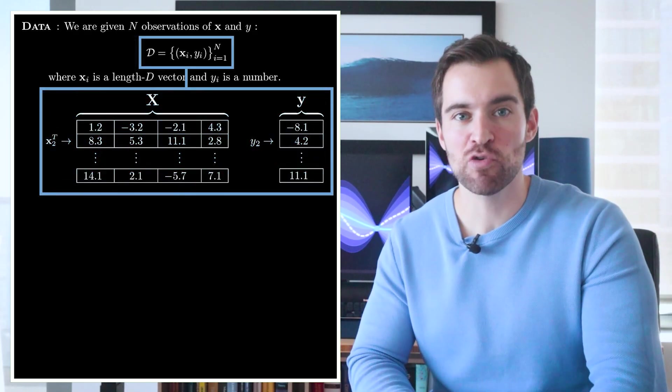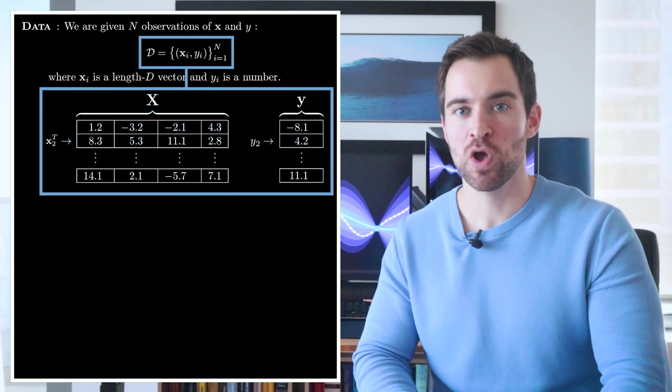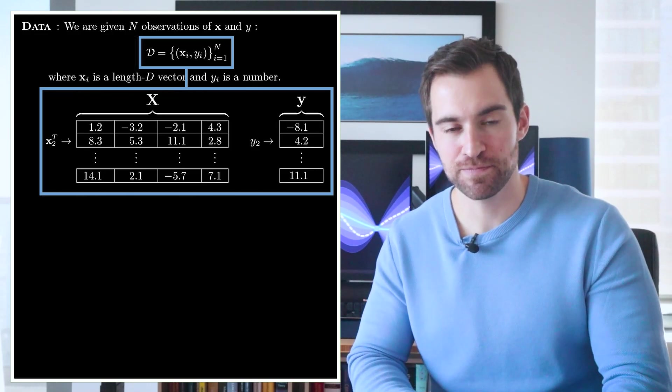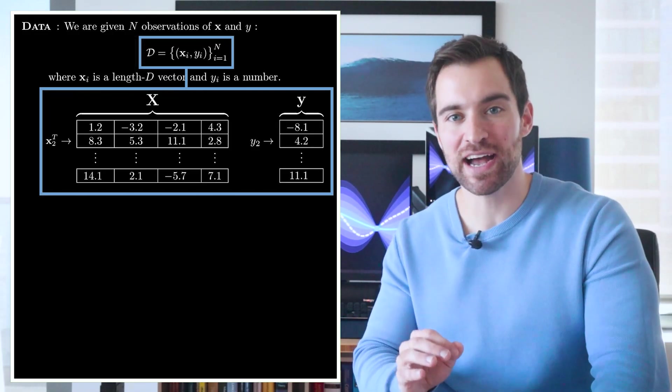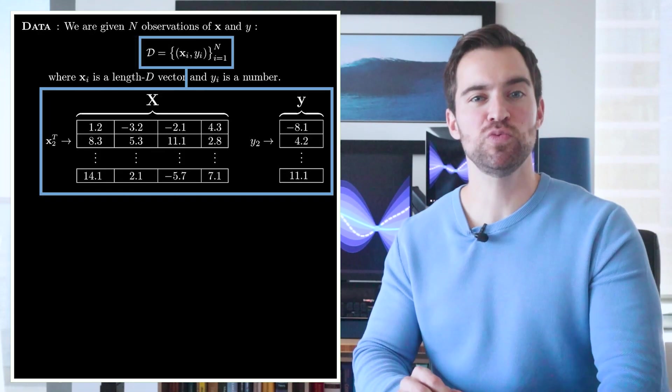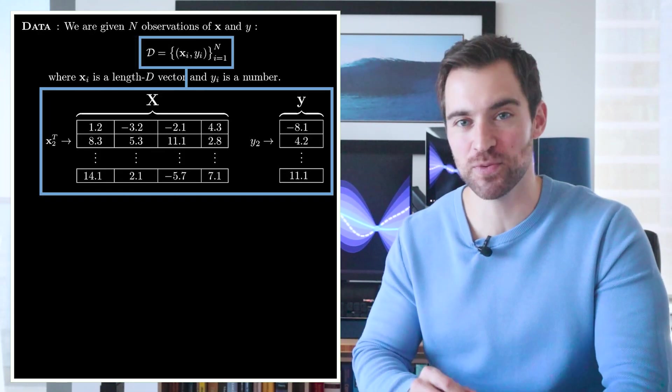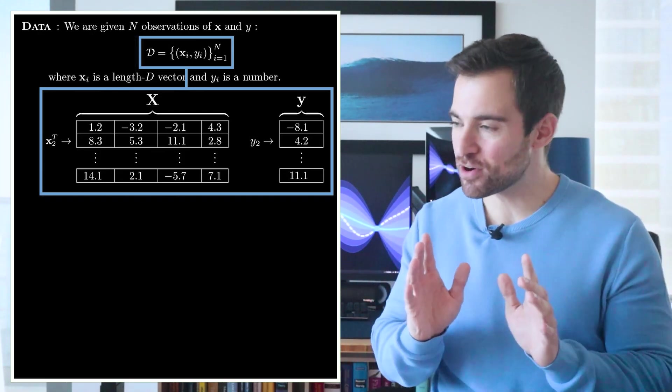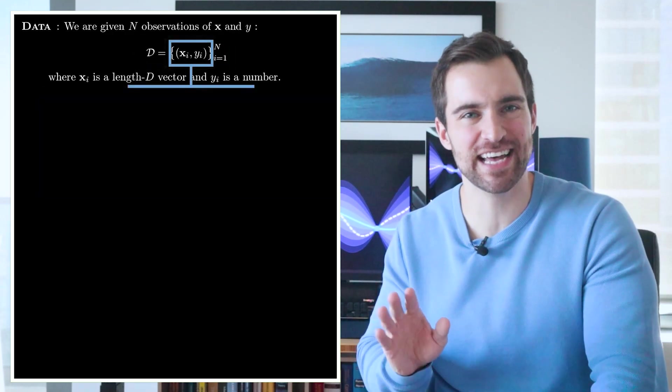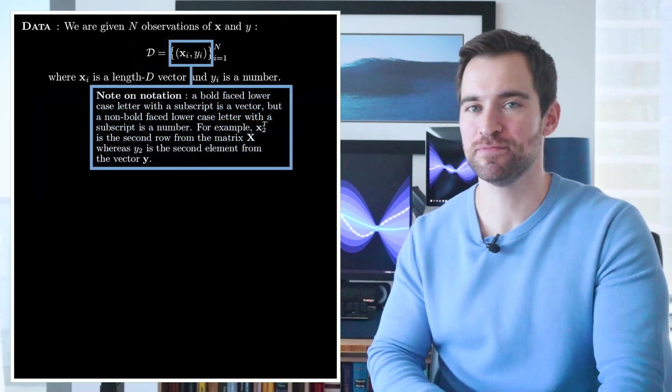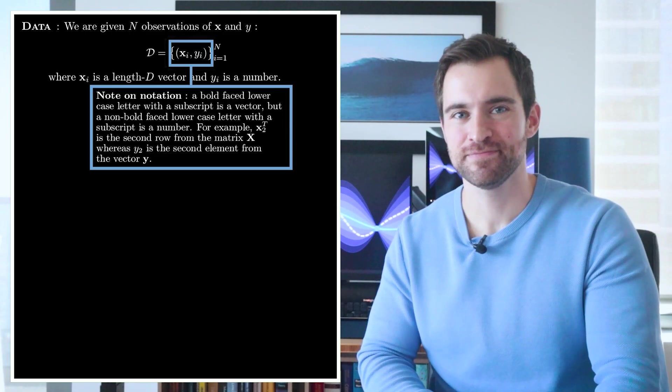Which looks like this. This big, bold-faced capital X represents this big grid of numbers, where each row is an observation. Also, every observation of y is collected into a vector, which we represent with a bold-faced lowercase y. Also, if it's hard to see how this notation represents that data, then read this note. But otherwise, don't.